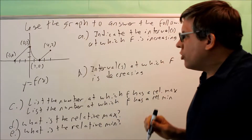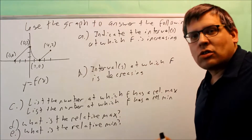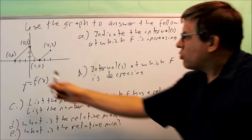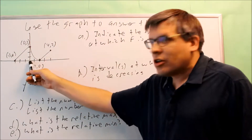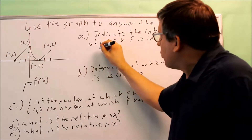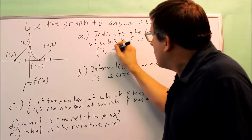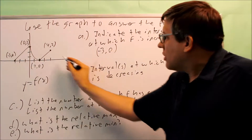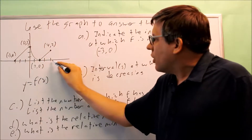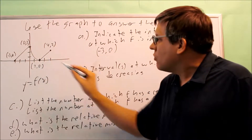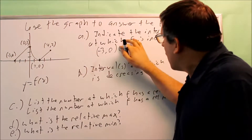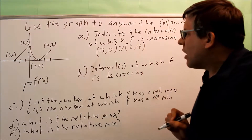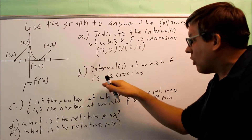When you indicate your interval, you're indicating only the x values for which the graph is increasing. Between the x value of negative 3 and the x value of 0, the graph is going up — so from negative 3 to 0 is my first interval. The second interval is between x values of 2 and 4, where I also have another part of the graph that's increasing. I'm using parentheses here, and you'll see why in a second.